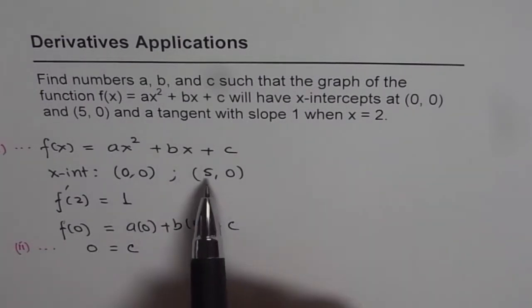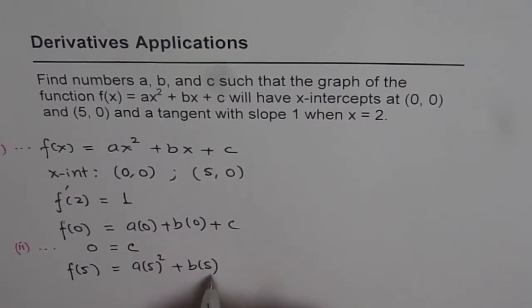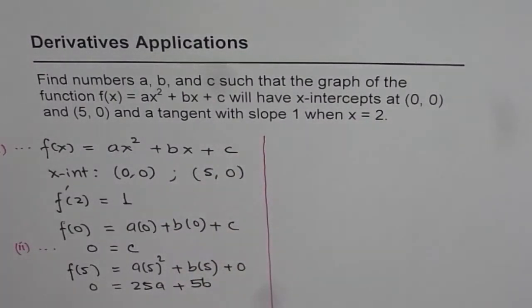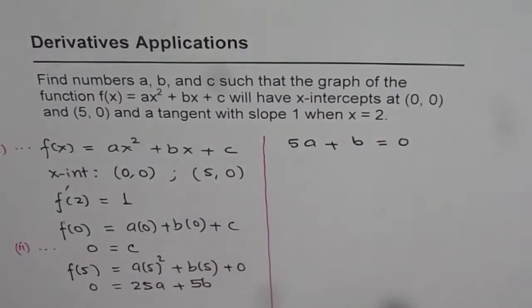Now we are given this point as (0,0), so y value is 0. So we get 0 = c. So that means we get the value of c from the first equation. Now let us put the x-intercept (5,0) in our equation and see what do we get. 5 is the value of x and 0 is f(5). So we have f(5) = a(5)² + b(5) + c. Now f(5) is 0, so we get 0 = 25a + 5b. Dividing by 5, we get 5a + b = 0.